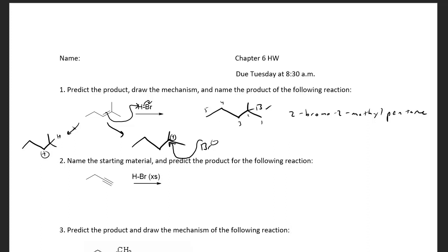For the next problem: name the starting material and predict the product. We have a four-carbon chain with an alkyne. For numbering, the triple bond is part of the parent name, so carbon one is here, two, three, and four — this is 1-butyne. Notice the suffix: alkane has 'a', alkene has 'e', and since it's a triple bond we have 'y' — that 'y' represents the triple bond in butyne.